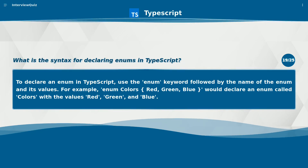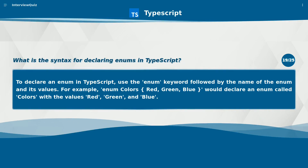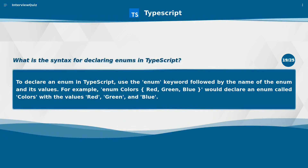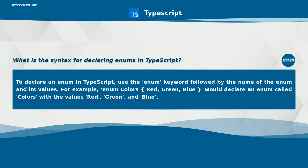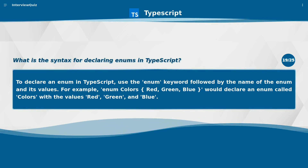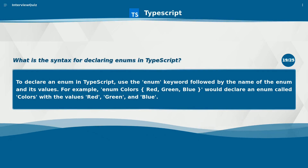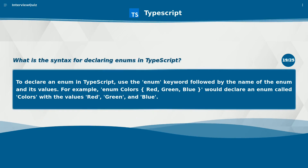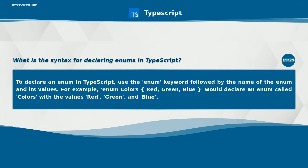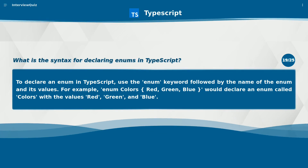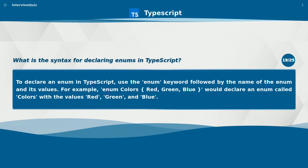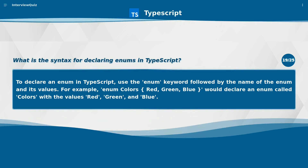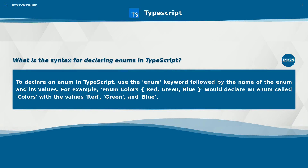What is the syntax for declaring enums in TypeScript? To declare an enum in TypeScript, use the enum keyword followed by the name of the enum and its values. For example, enum Colors { Red, Green, Blue } would declare an enum called Colors with the values Red, Green, and Blue.